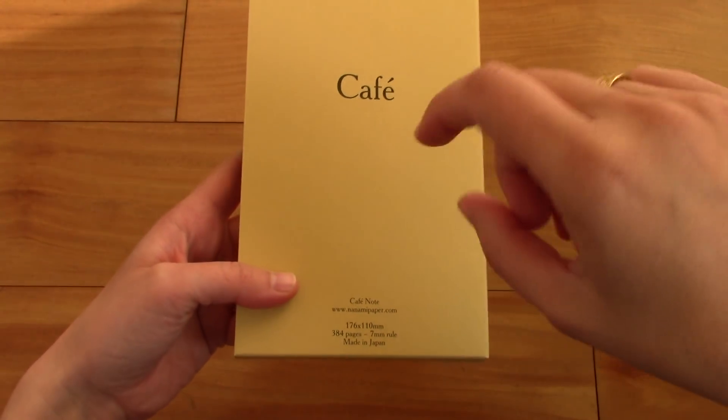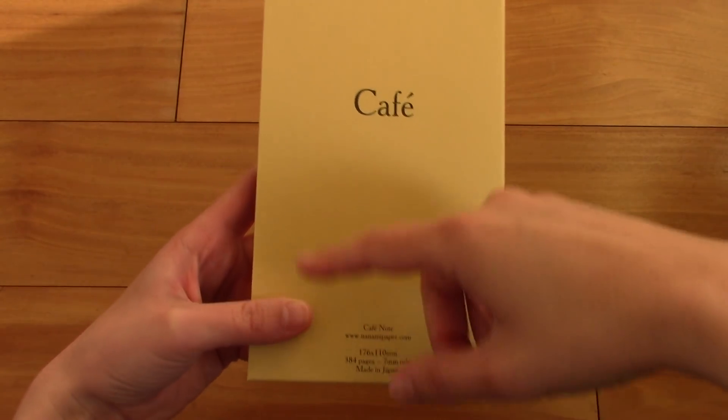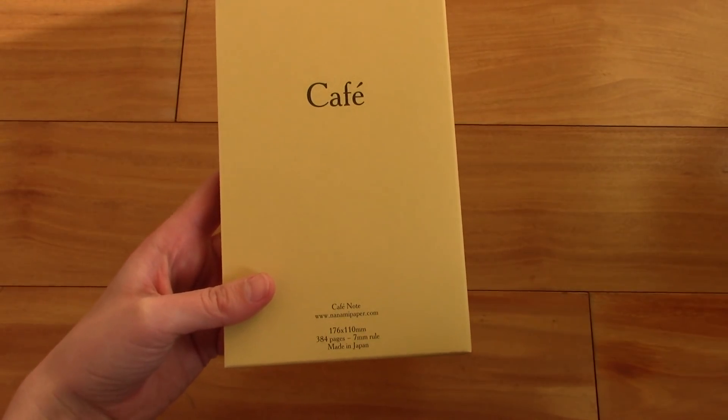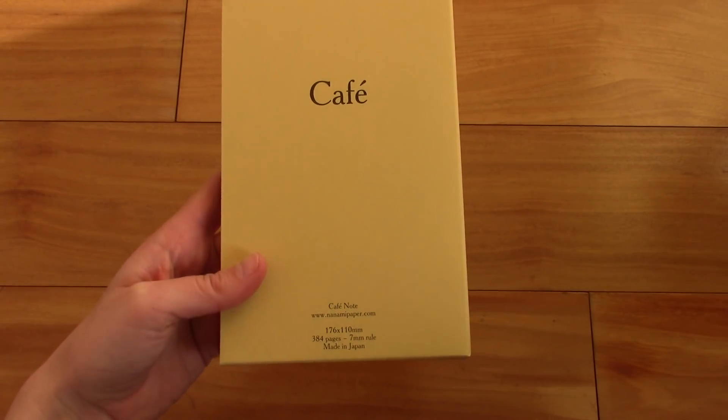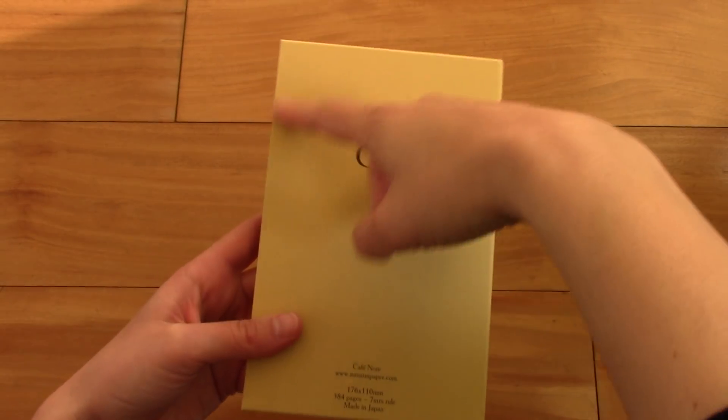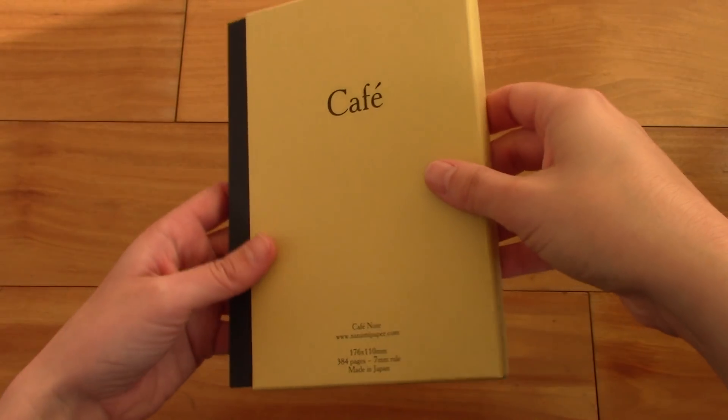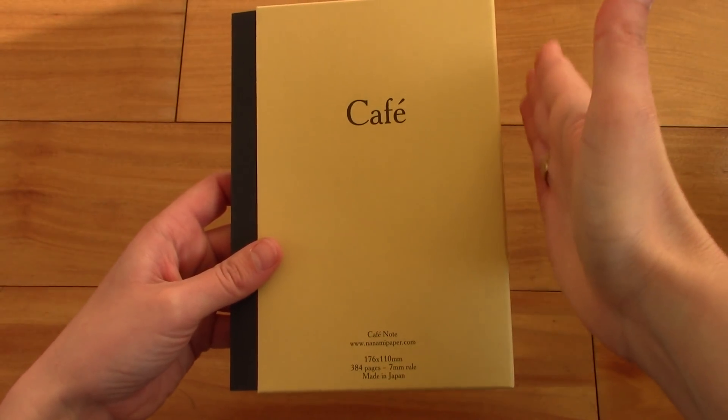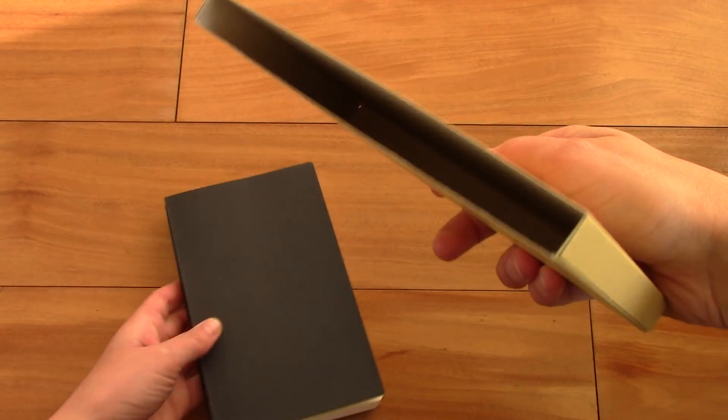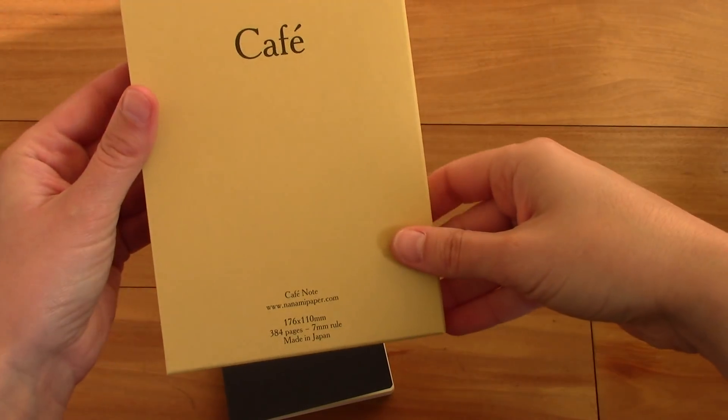This one is called a slim B6 size, so the dimensions are 17.6 x 11 cm or 4.3 x 7 inches. It is called a slim B6 because it is slightly more narrow than a standard B6 size. And it comes in this nice protective cardboard cover. It is called just yellow.